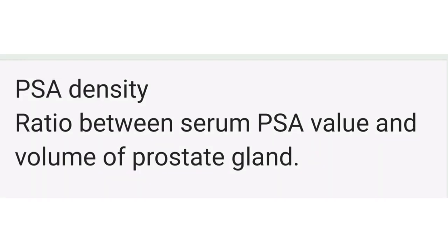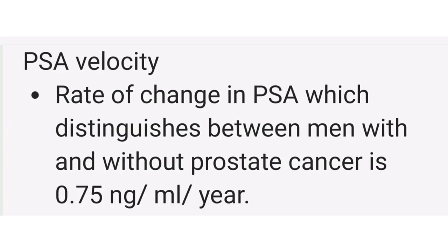We rely on PSA density, which is the ratio between PSA value and the volume of the prostate gland, and more specifically on PSA velocity, which is the rate of change of PSA. This distinguishes between men with and without prostate cancer, and the cutoff for PSA velocity is 0.75 nanogram per ml per year.